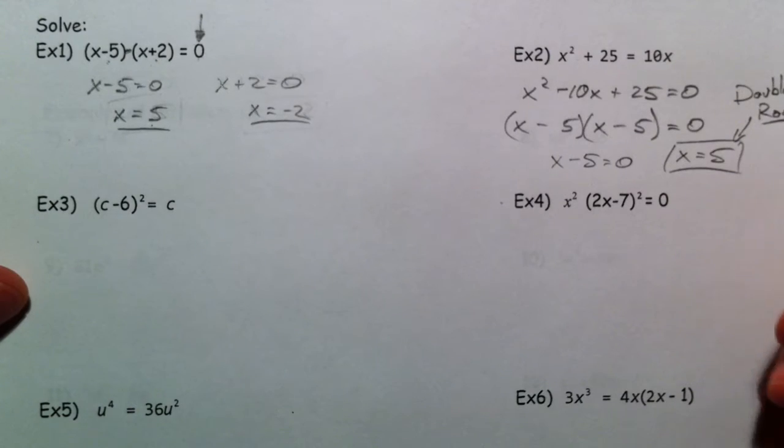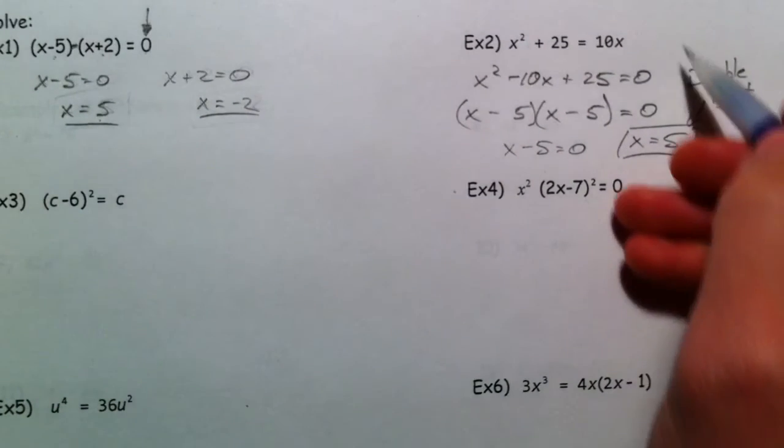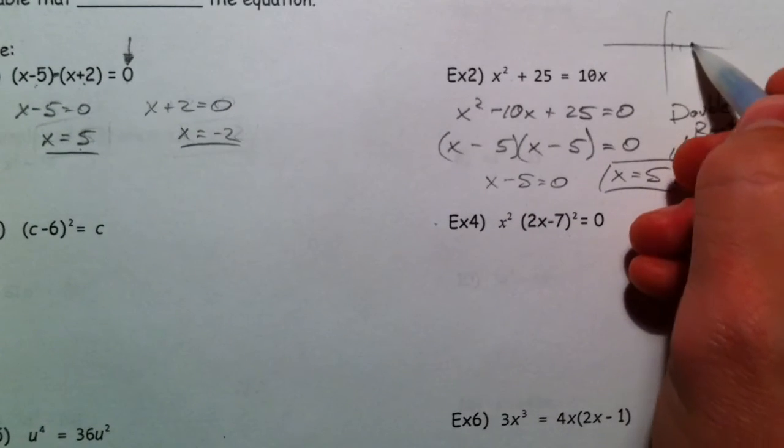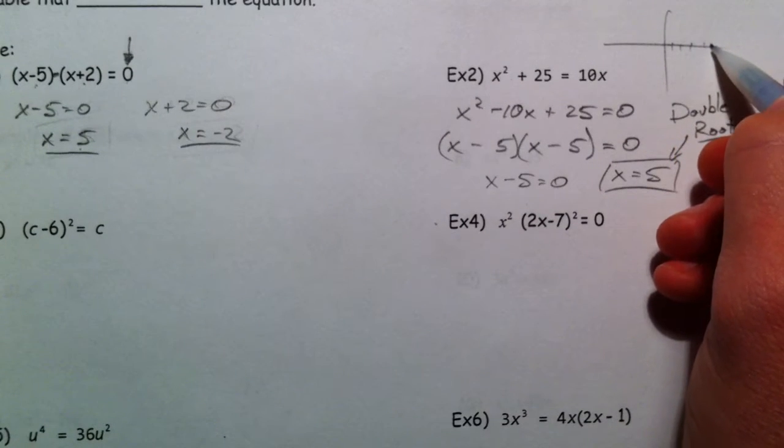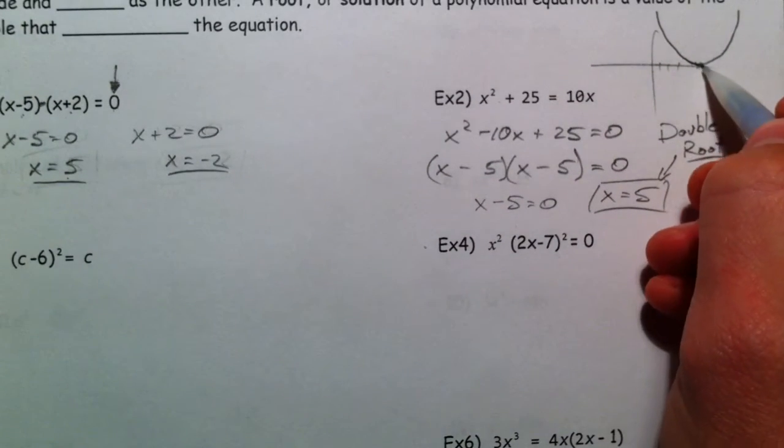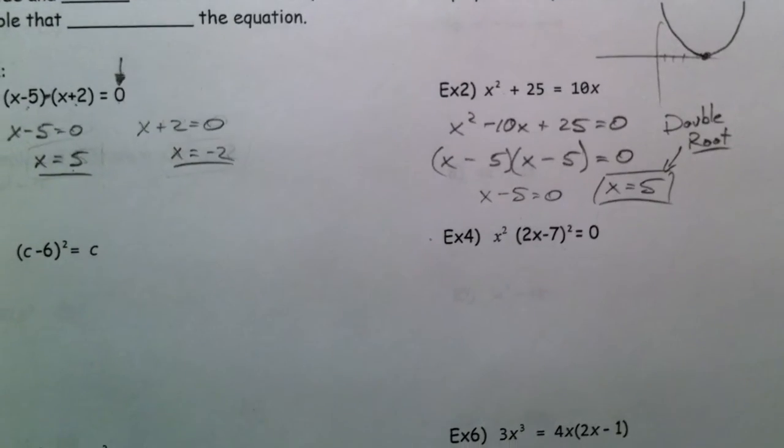If you were to look at this graphically, it would come down and be tangent to the x-axis at 5. 1, 2, 3, 4, 5. If you were to graph x minus 5 squared, and we already talked about this, but it would look like that. Anything that's tangent like that is a double root.